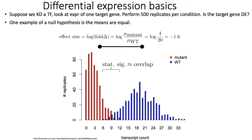One of the most frequent use cases of RNA-seq is to identify differentially expressed genes between two or more conditions. For example, if you were interested in identifying the targets of a particular transcription factor, one way to do that would be to measure the expression level of every gene in the genome before and after you knock down or knock out that TF. Suppose in this hypothetical example that you perform 500 RNA-seq assays on different samples within either the wild type or the mutant, and you want to ask whether one specific gene is differentially expressed between cases and controls.